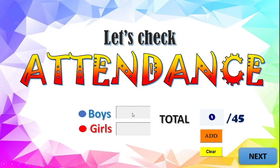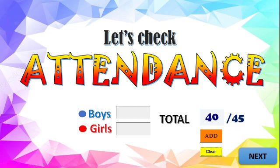For example, I have 20 boys and 20 girls. I just need to click the Add button and there you go — see the label? It changed already to 40, meaning the two values were added up. Then to clear the text boxes for boys and girls, just click the Clear button, then click the Add button, and you will see the total reset to zero.